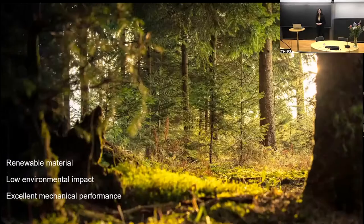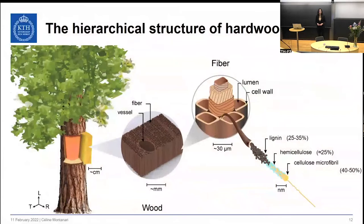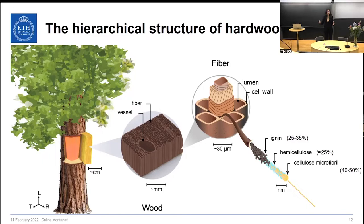The excellent mechanical performance of wood originates from its hierarchical structure. Wood is a sophisticated material that is anisotropic and organized at various levels, from the meter scale down to the nanometer scale. The hardwood tissues consist of cylindrical wood cells that have various morphologies and functions. The fibers are about 30 microns wide and about 1 millimeter long, and serve for mechanical support.